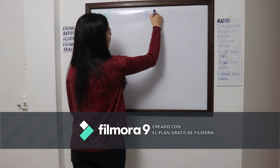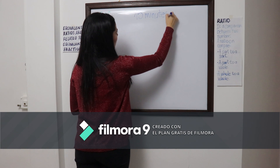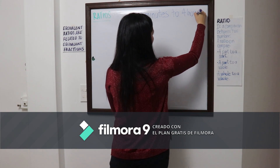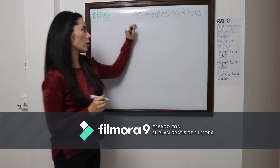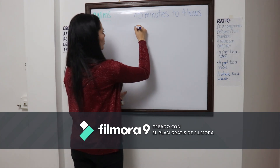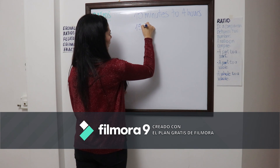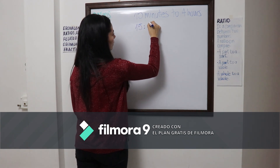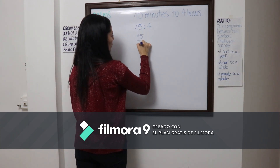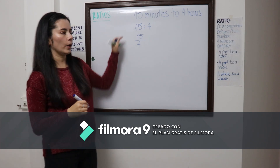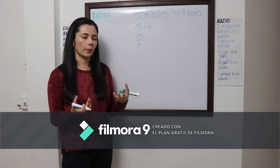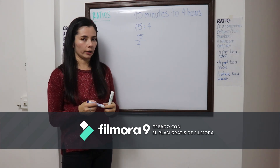For example: 15 minutes to 4 hours. This is a comparison, and it's already written in words, so this ratio is already in word form. We have two other options: we can use the colon or scale form, or we can work with the fraction. All three ways are always allowed, but it depends on the context.